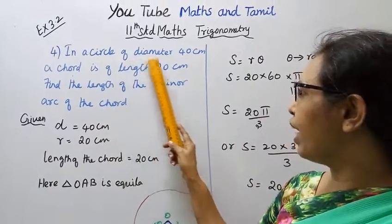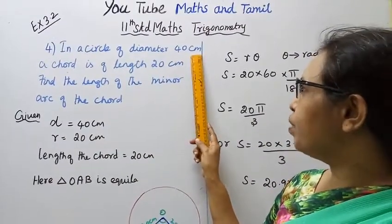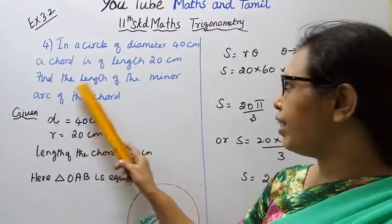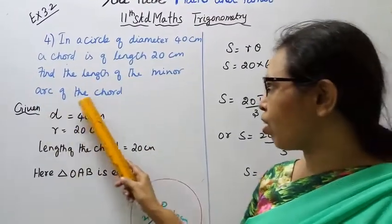In a circle of diameter 40 cm, a chord is of length 20 cm. Find the length of the minor arc of the chord.